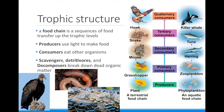The next trophic level is called secondary consumers. Secondary consumers eat the primary consumers. These are carnivores or omnivores, since they are eating animals. The terrestrial example is a mouse, who eats the grasshopper, and the aquatic example is the fish, who eat the zooplankton.